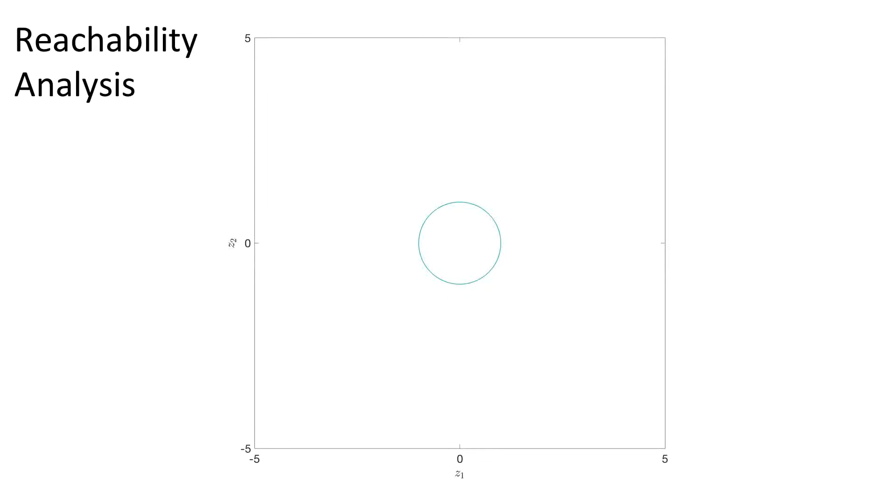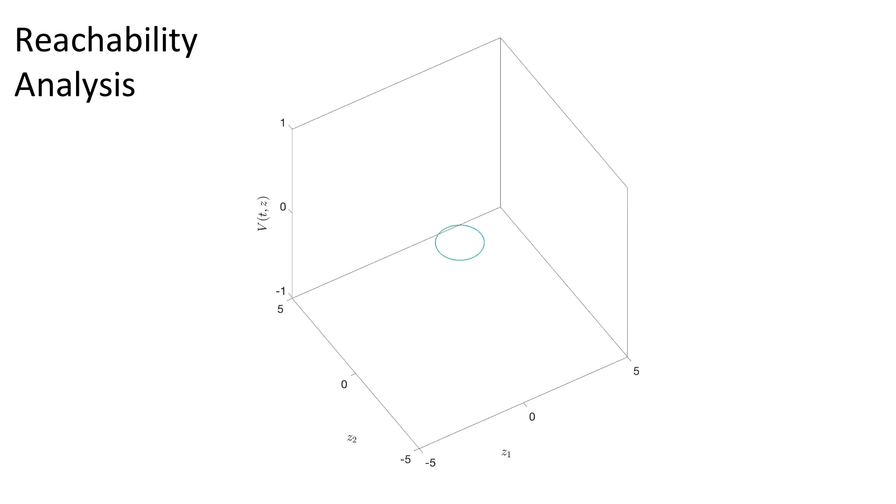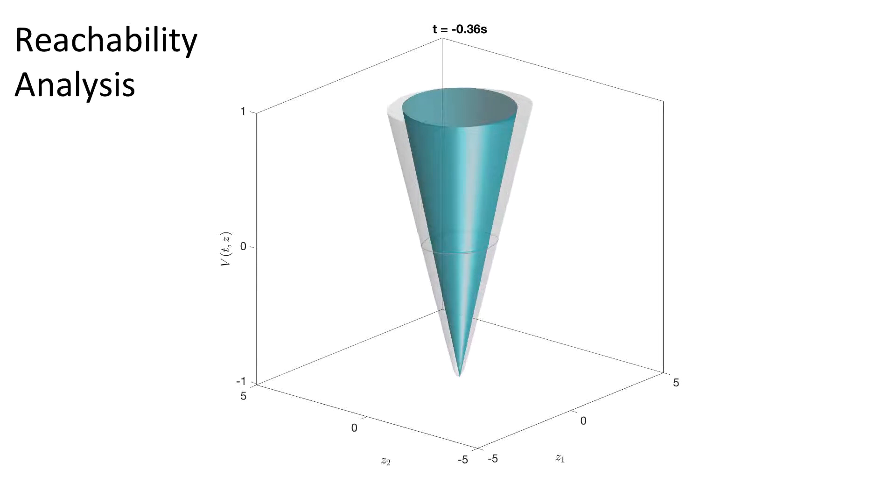Here is a brief 2D demo of reachability analysis. Starting with a set of unsafe states, we define a value function that is positive outside and negative inside the set. Using Hamilton-Jacobi reachability, we can propagate this value function backwards in time over a desired time horizon.